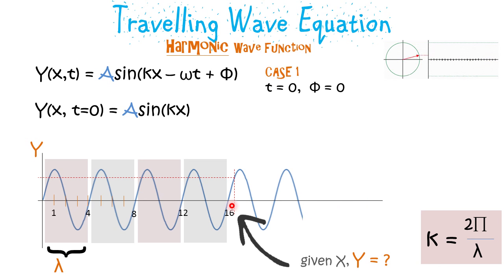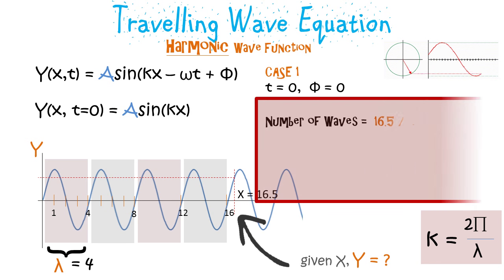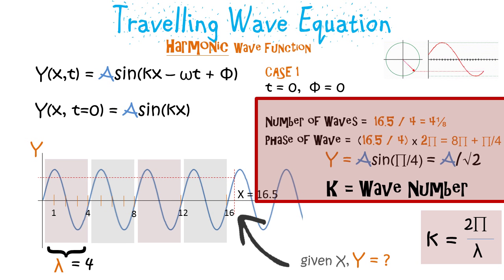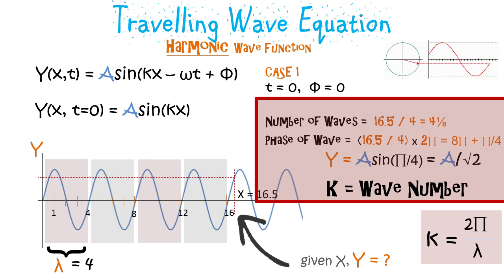The wave has completed four full cycles and one-eighth of the fifth cycle. So when we multiply 4 and 1/8 by 2π — where 2π represents one full cycle — we get 8π plus π/4. When we substitute this into kx and resolve it, we get A sin(π/4). Notice how k, which is 2π/lambda, is used to arrive at the phase of the wave based on the number of waves.